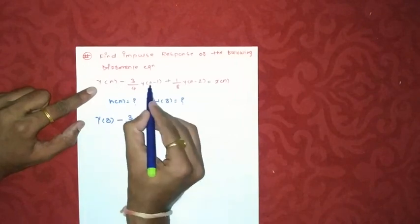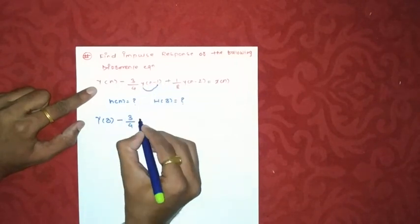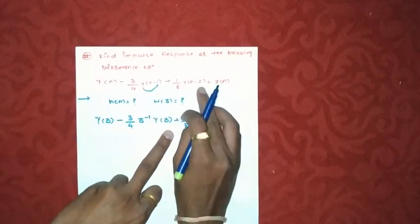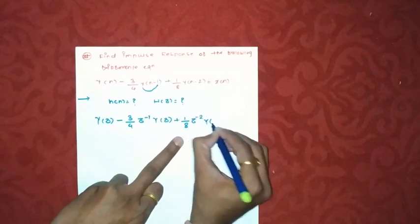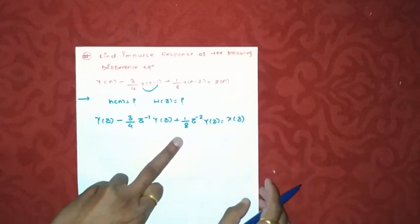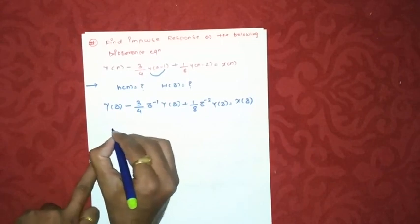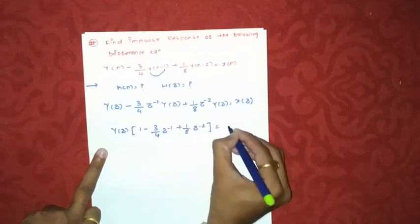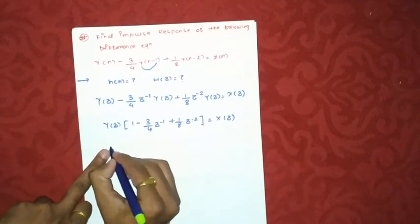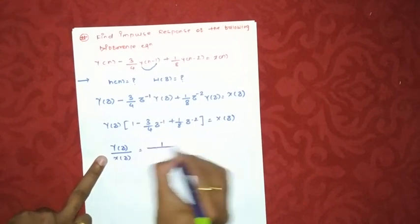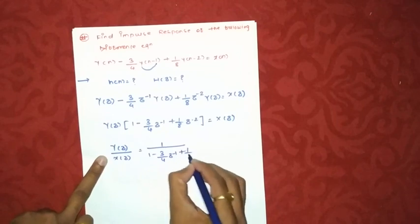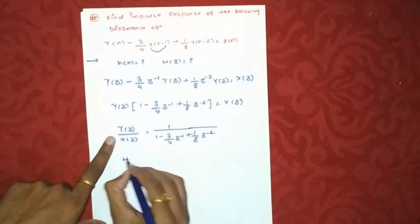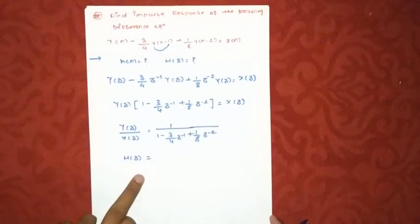We apply the Z-transform to the difference equation. Y(n) becomes Y(z); the term (3/4)·y(n−1), shifted by one unit, becomes (3/4)·z⁻¹·Y(z) by the time-shifting property; and (1/8)·y(n−2) becomes (1/8)·z⁻²·Y(z). The input x(n) becomes X(z). Collecting all Y(z) terms: Y(z)·[1 − (3/4)z⁻¹ + (1/8)z⁻²] = X(z).